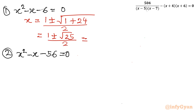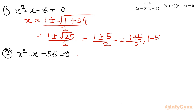We know that the square root of 25 is 5. So from the first equation, using the quadratic formula, we get x equal to (1 plus 5) over 2 or (1 minus 5) over 2. That gives 6 over 2, which is 3, and minus 4 over 2, which is minus 2.